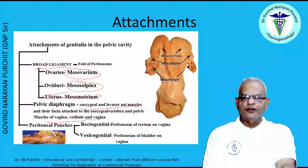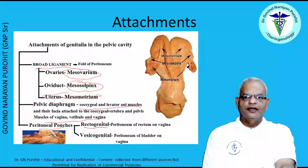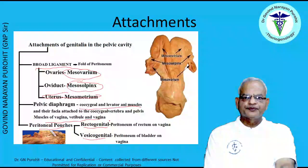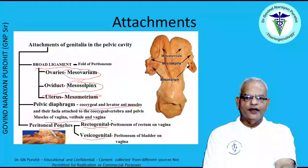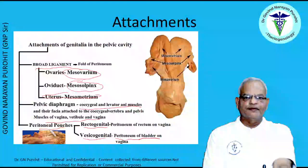There are two peritoneal pouches: the rectogenital pouch and the vesicogenital pouch. The rectogenital pouch is formed by the peritoneum of the rectum over the vagina, and the vesicogenital pouch is formed by the peritoneum of the bladder on the vagina.